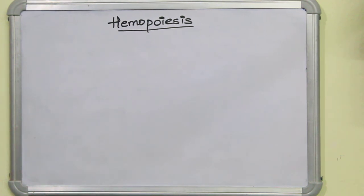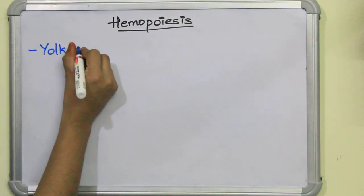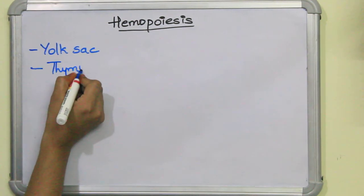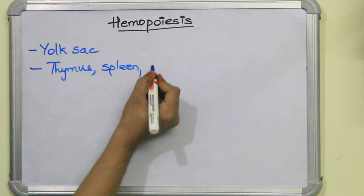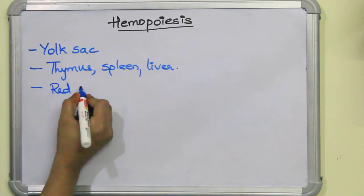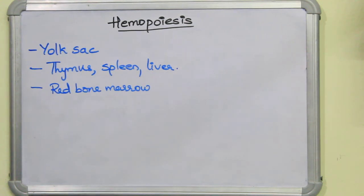Where exactly does hemopoiesis occur? It takes place in a special location, and that location varies through developmental stages. If you see the initial developmental stage of the fetus, initially it occurs in the yolk sac, then it occurs in the thymus, spleen, and liver. Later on, just before three months of birth, it occurs in the red bone marrow, and after birth the synthesis continues in the red bone marrow.